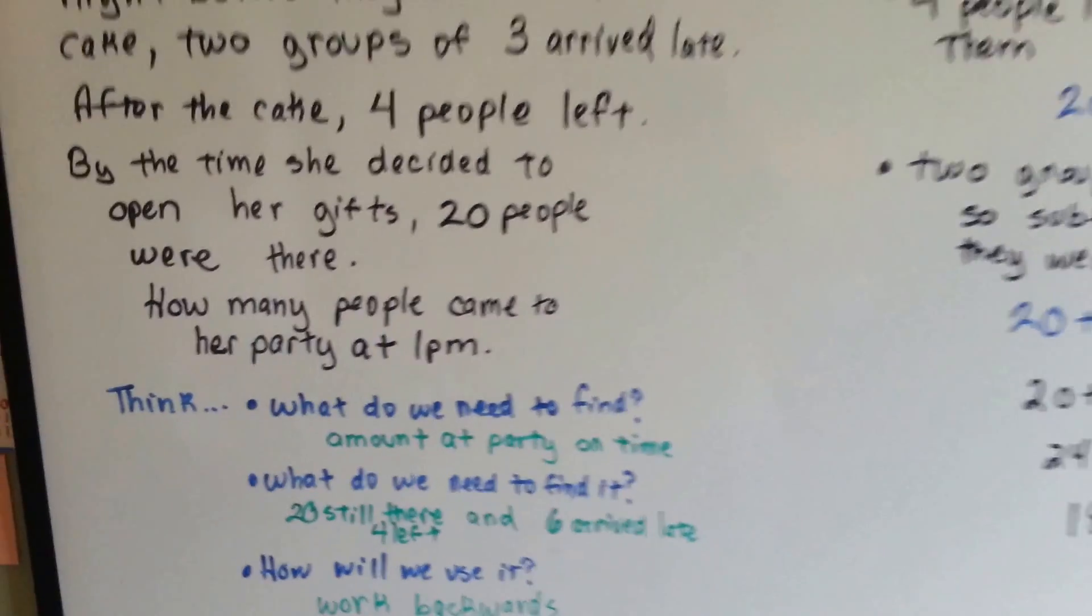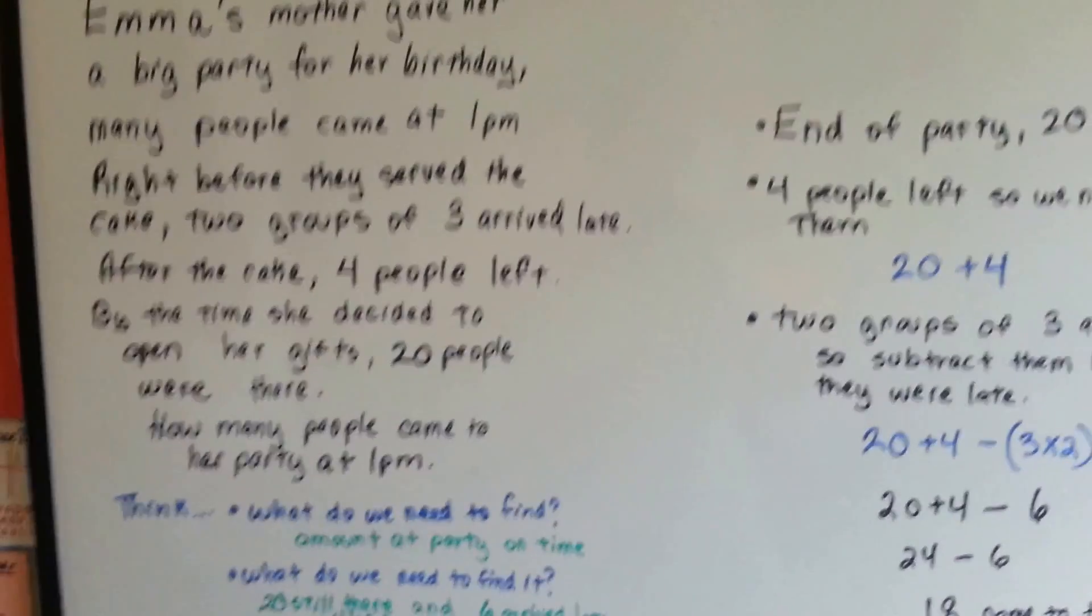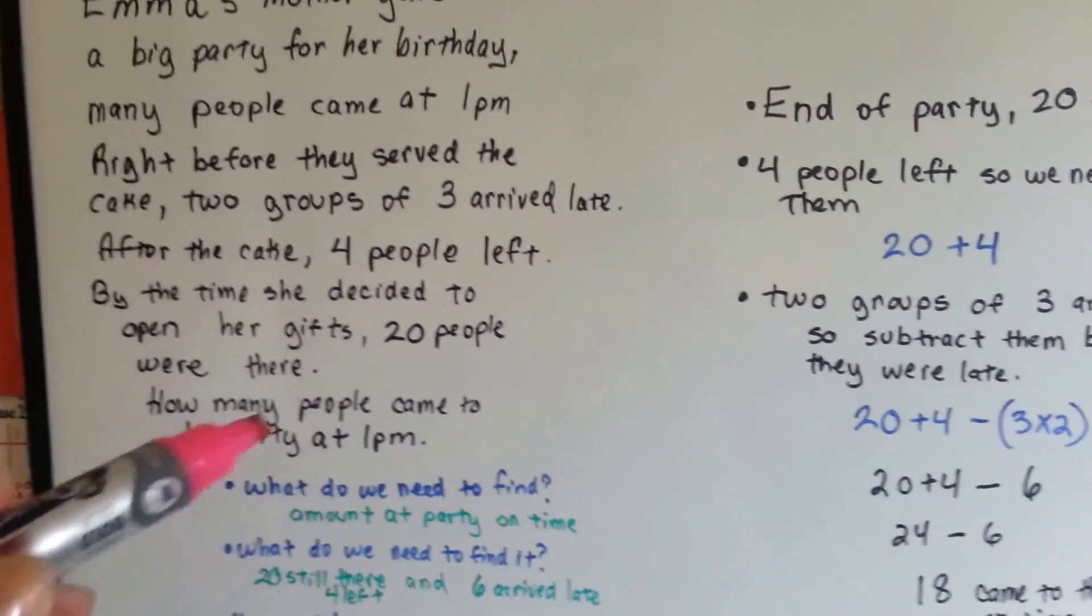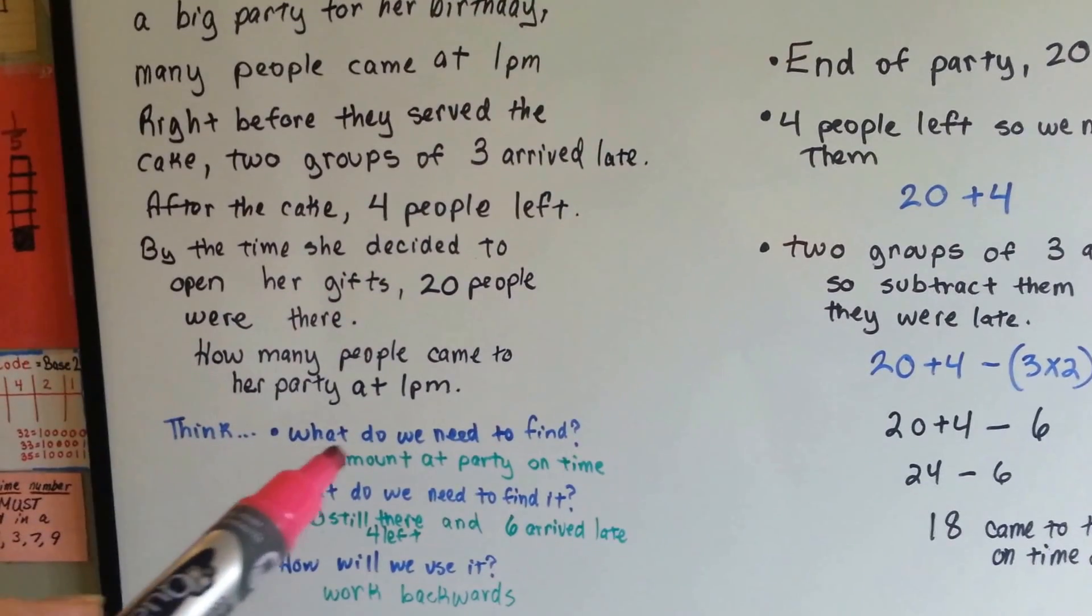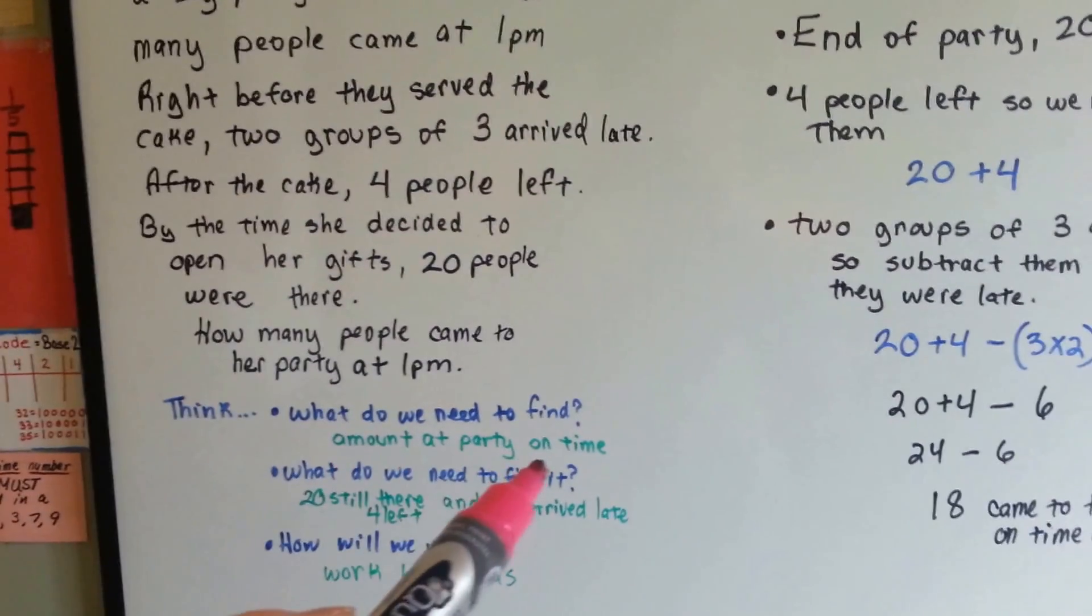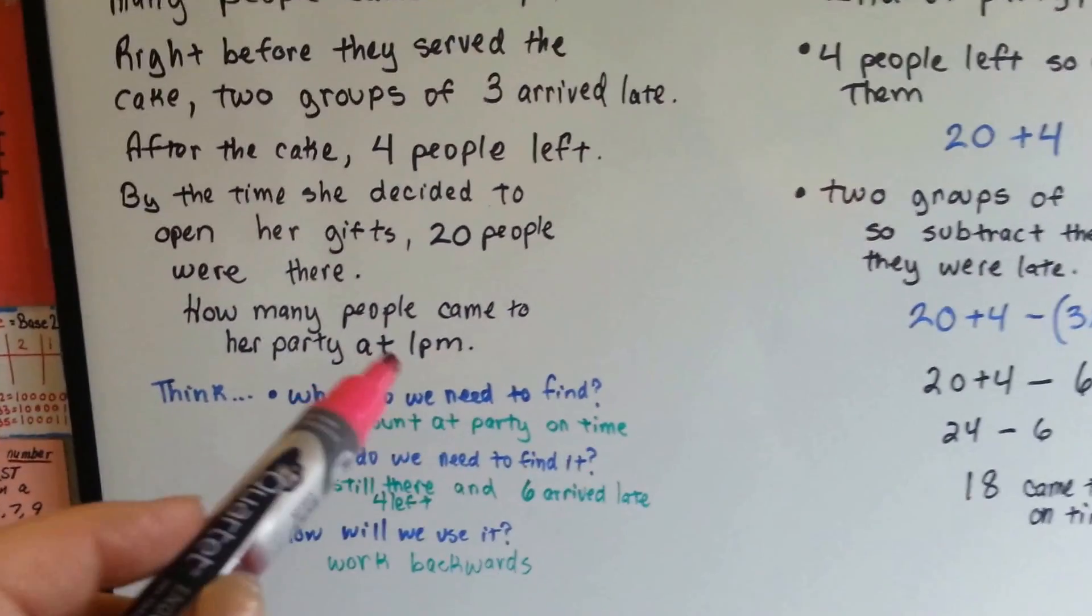Wow, that's a lot of information, isn't it? Alright, so we're going to take a step back and we're going to look at it. At the end of the party, there were 20 people. So what do we need to find? We need to find the amount that came to the party on time at 1pm.